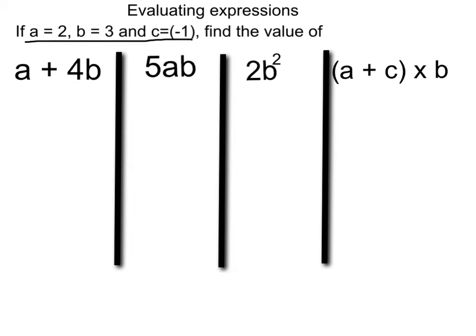For a plus 4b, we get our first line, substitute in the numbers: 2 plus 4. There's no sign between the 4 and the b, but always assume it's a times, so this becomes 4 times 3. Follow BODMAS, so we do the timesing first. 2 plus 4 times 3 is 12, and then do the adding: 14.